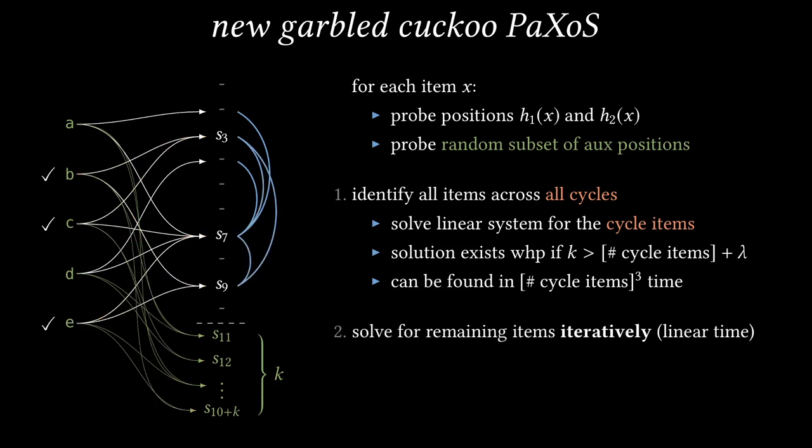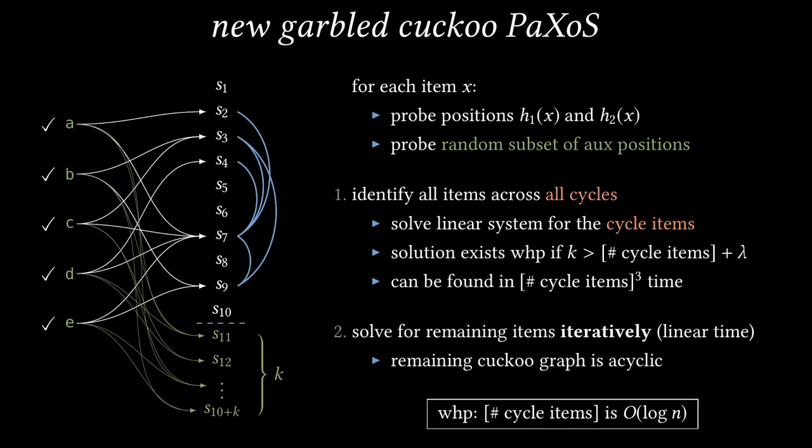Now we have fixed all the auxiliary positions of the Paxos vector, as well as some of the primary cuckoo positions. All the cycle items have satisfied their linear constraints. The only thing left to do is satisfy the constraints of those other items, and we can do this using the iterative process that I described earlier. We find an item with only one of its probe positions unset, and then solve for that unset position. This process succeeds just as I described it before, because after processing all the cycle items, the remaining cuckoo graph is acyclic. And as I mentioned, we can't guarantee that the original cuckoo graph is acyclic, but we can choose parameters so that the number of cycle items is very small, logarithmic in n, with overwhelming probability. With such a small number of cycle items in the worst case, both the size and the encoding complexity of this data structure is linear in the total number of items.